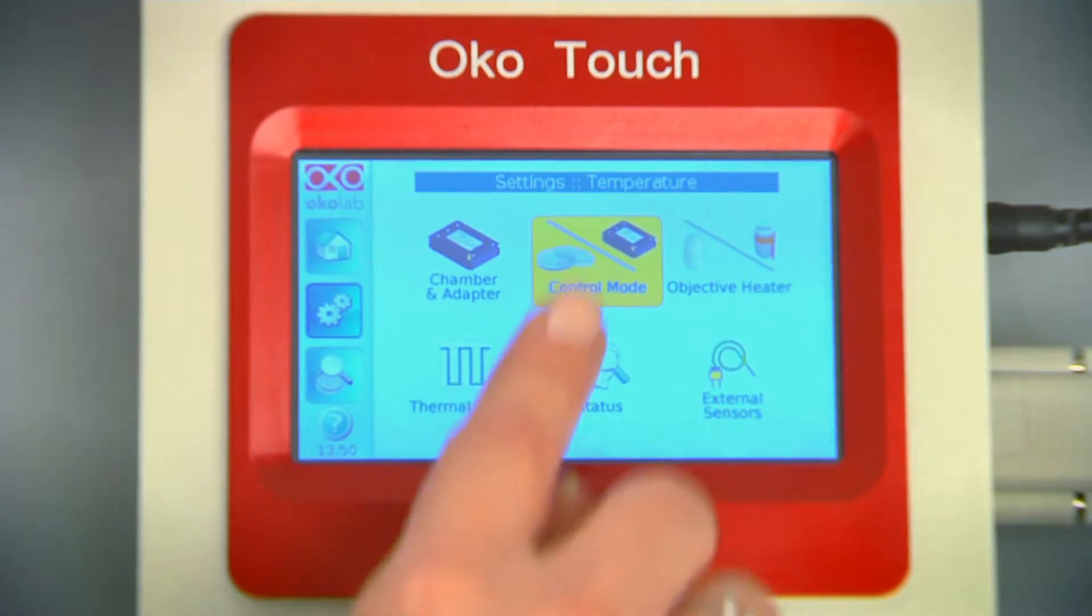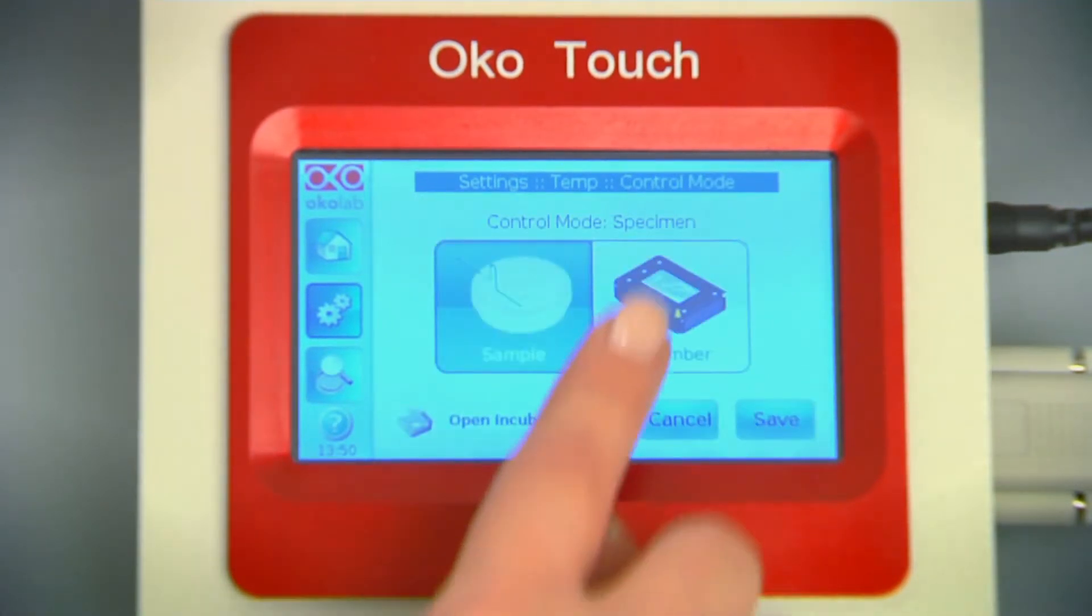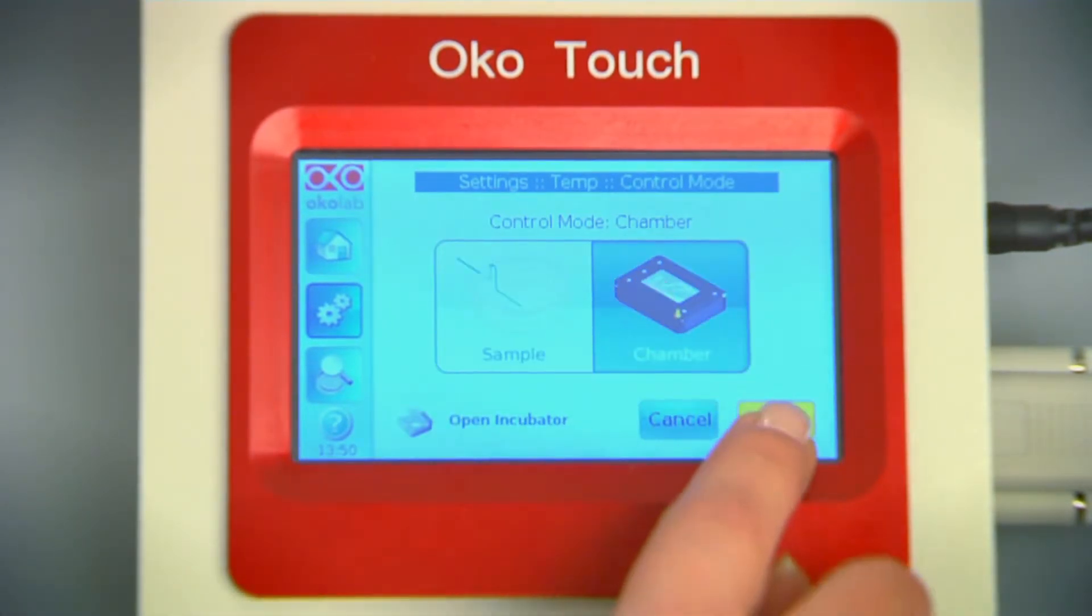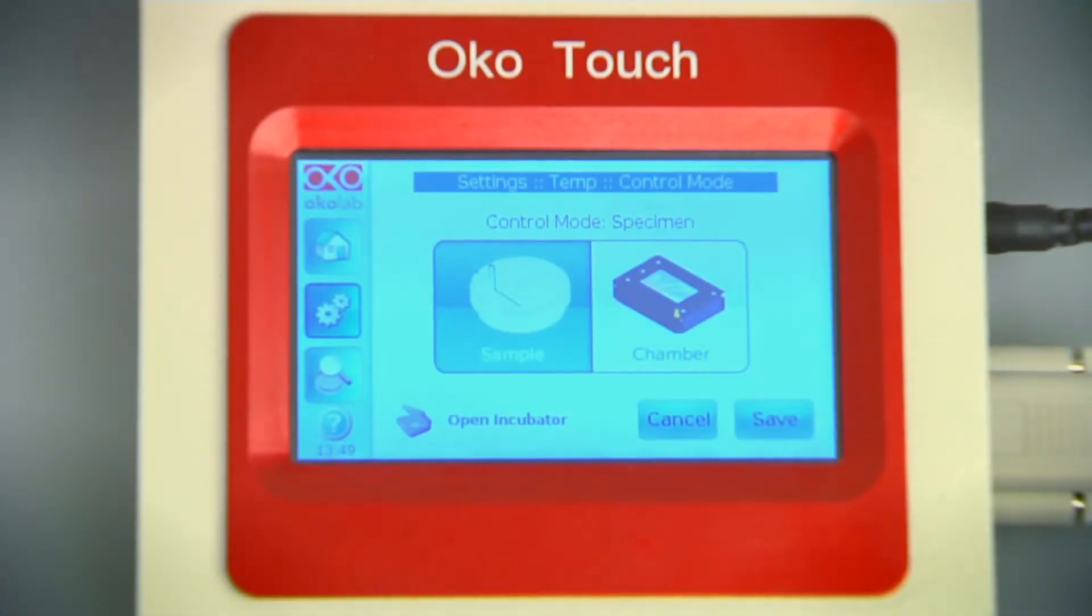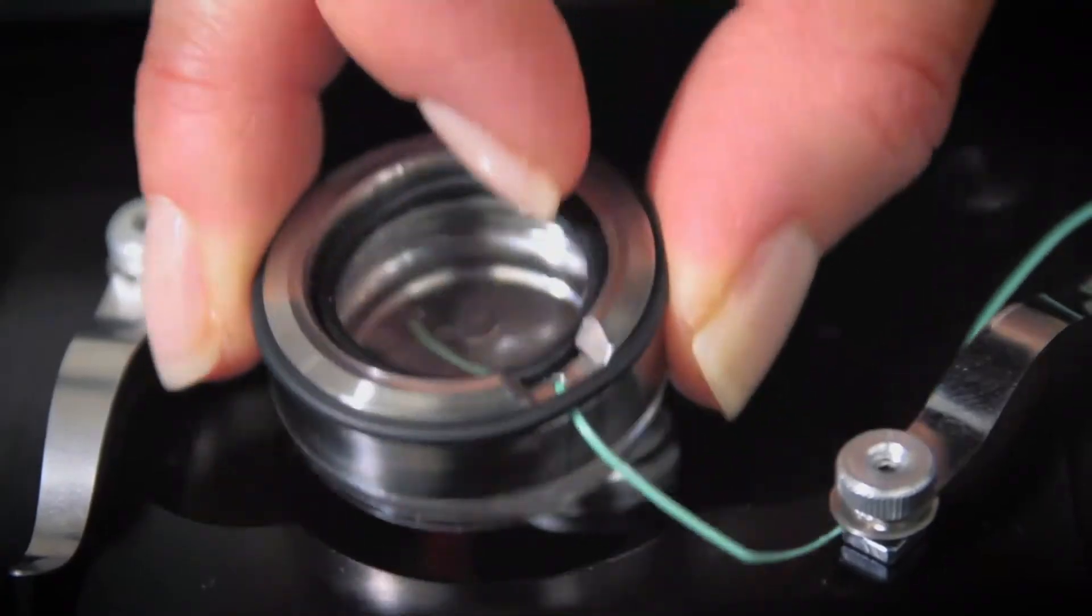Feedback to the controller can be provided either by the temperature sensor embedded into the chamber main body or by an external sensor conveniently placed in a reference well next to the sample.